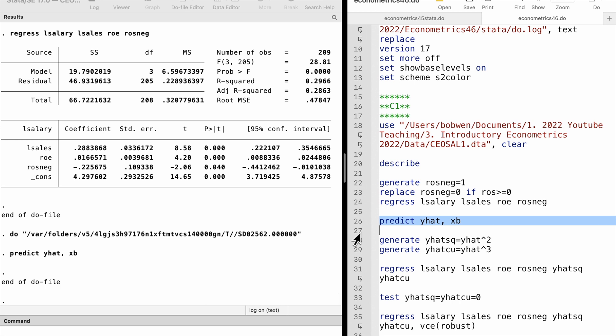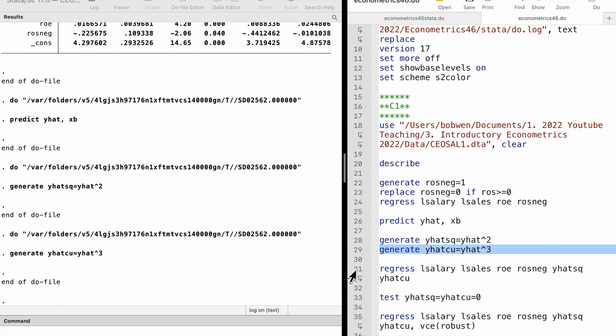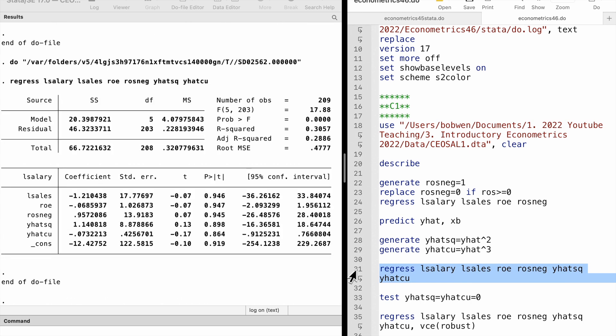Then, we generate the squared fitted values and the cubic fitted values. The RESET is to estimate the expanded equation and do the F-test for the joint significance of delta 1 and delta 2. The null hypothesis is that both delta 1 and delta 2 are zero.